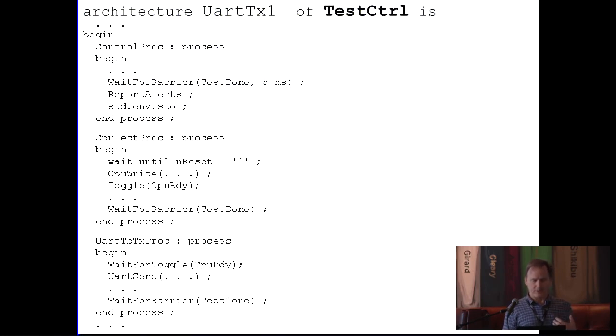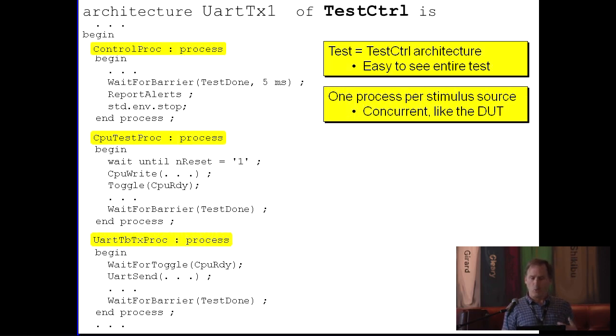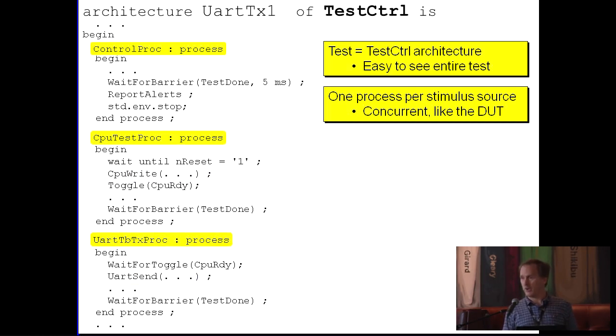Taking a quick but brief deeper dive into more details. Test control, you see the whole test in one file. Anything we do as constrained random, we're layering in here. One process per stimulus source, it's concurrent, just like your DUT is concurrent. So the concurrency is not fork and join. It's leveraging HDLs, what HDLs already have.